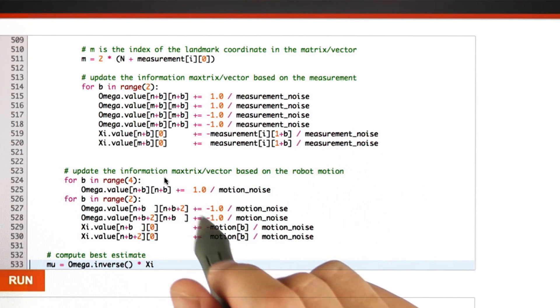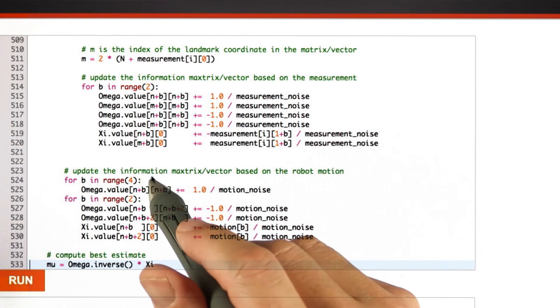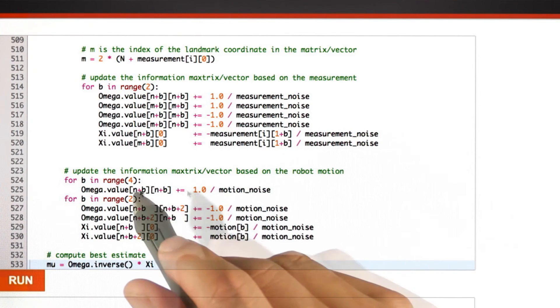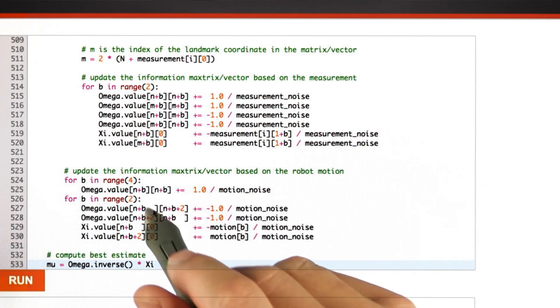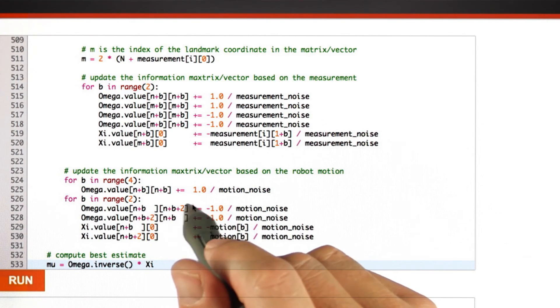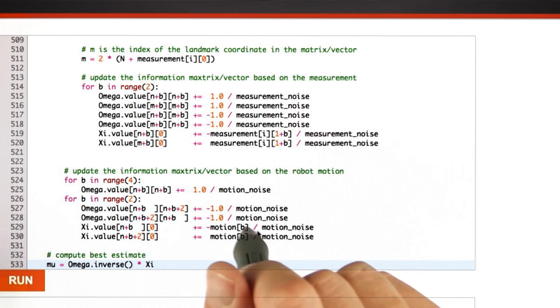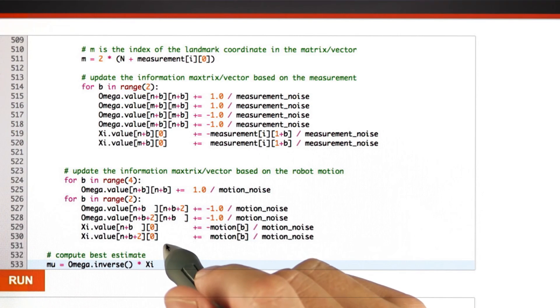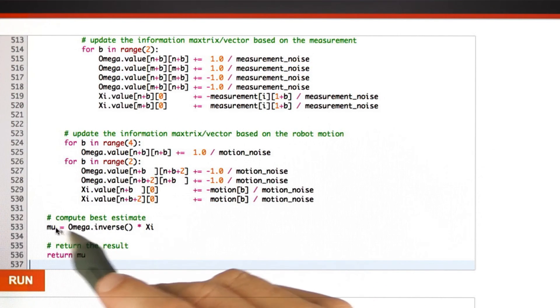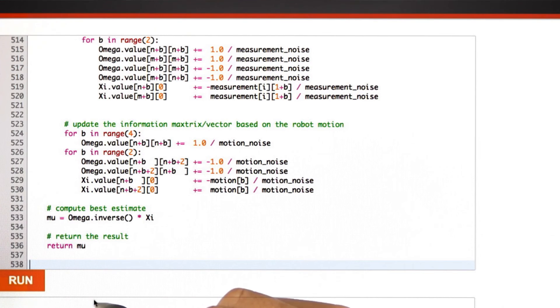Motion is handled very much the same way. I extract the motion command. I add among the main diagonal between the two variables that are being tied together, a plus 1. Then I add on the off diagonal elements minus 1s. Again, you have to stare at this very carefully to see they're all correct. And then I add the motion itself to the vector of xi. That's what I had to implement. I then solve as before and return the solution. And that's exactly what's being printed out down here.